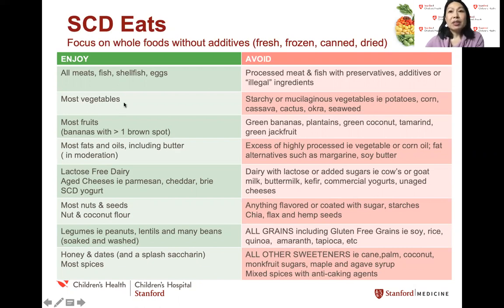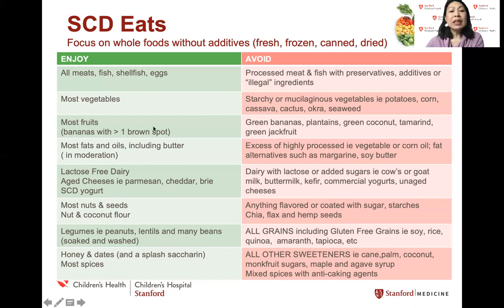You are allowed to have most vegetables, including all leafy greens, cruciferous vegetables such as broccoli, and root vegetables such as beets and carrots. What you can't have are starchy or mucilaginous vegetables such as potatoes, corn, cassava, cactus, okra, or seaweed. I like to think about avoiding things that fry up really well and avoiding things that get really slimy when cooked. You can have most fruits on the SCD. You just have to make sure bananas have greater than one brown spot to indicate that the starches have been converted by the fruit amylase to more digestible sugars.